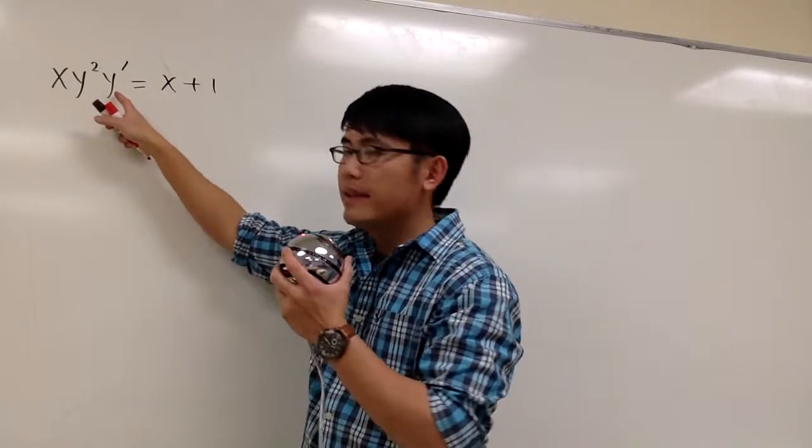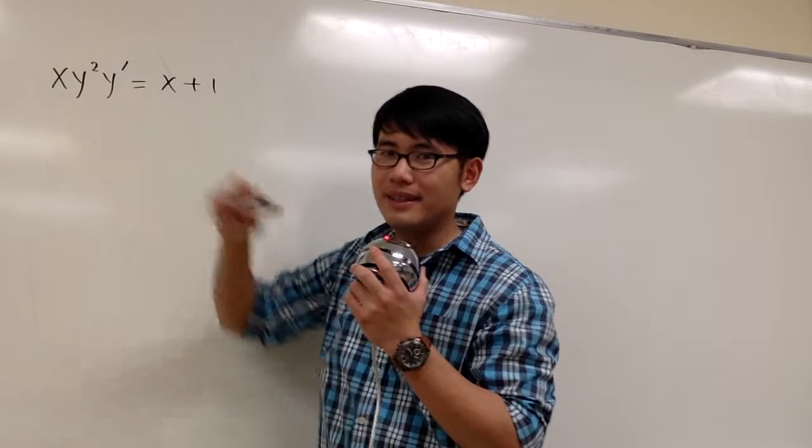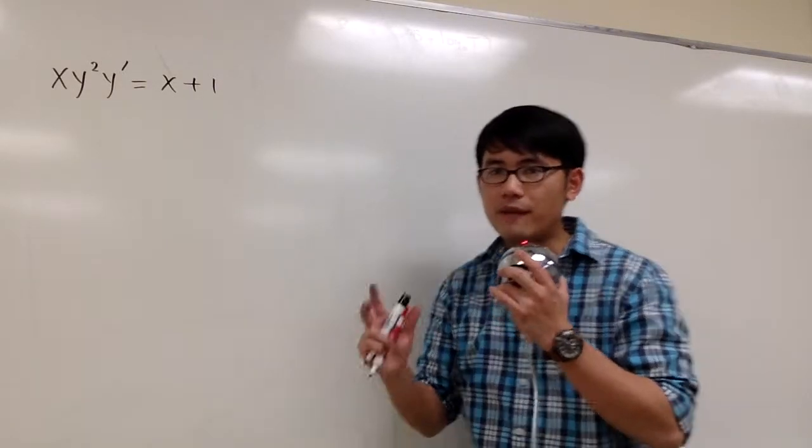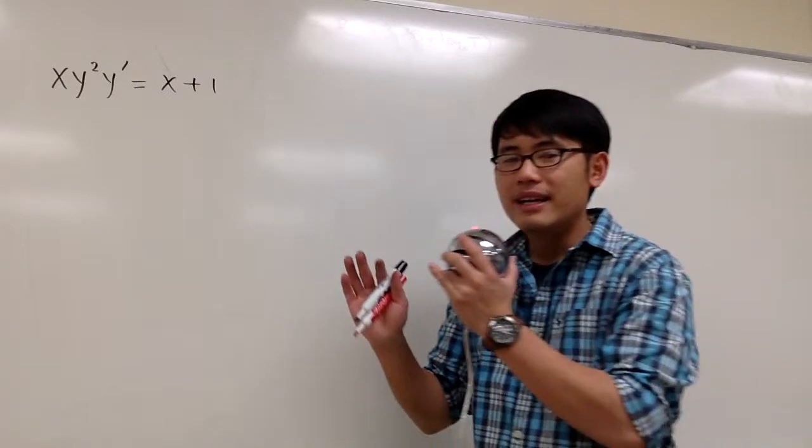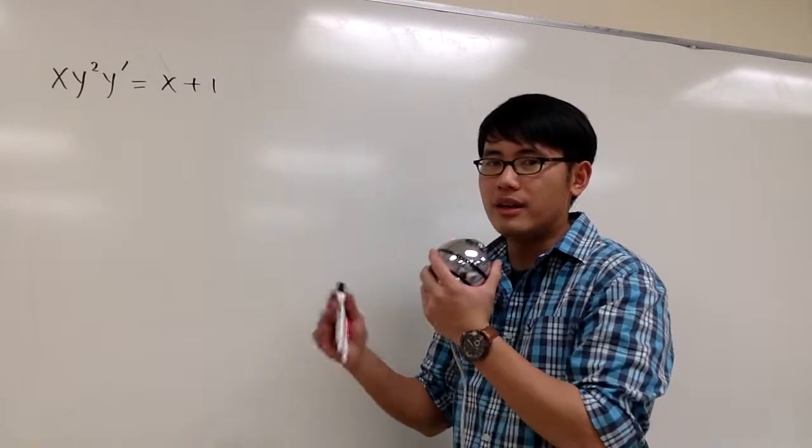And by the way, this is secretly dy dx, right? So our goal is first, put all the x along with dx together on one side, and then y and dy together on the other side.